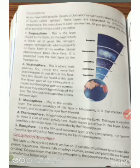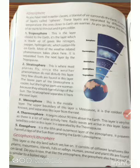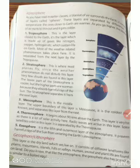The upper boundary of the stratosphere leads to the middle layer, the mesosphere. It is the coldest place known and separates this layer from the next.